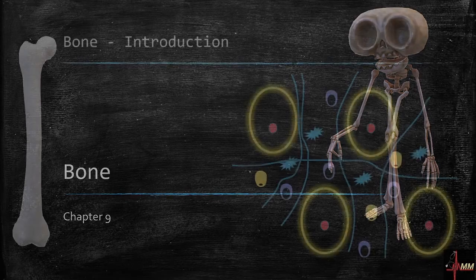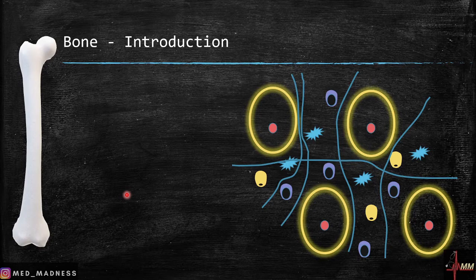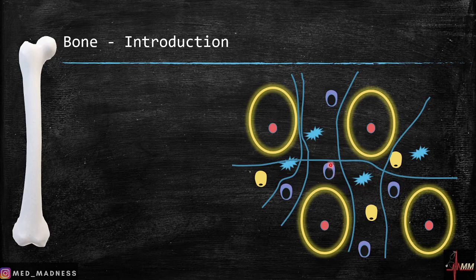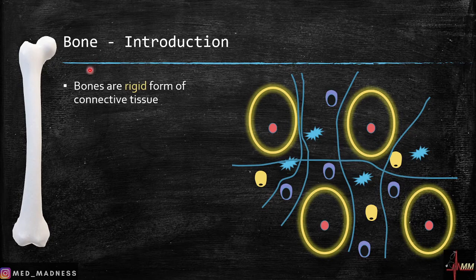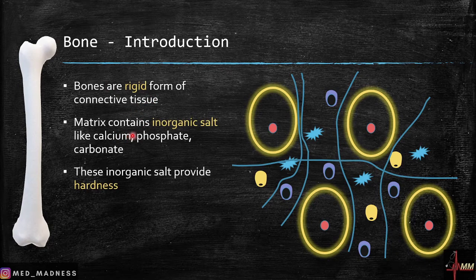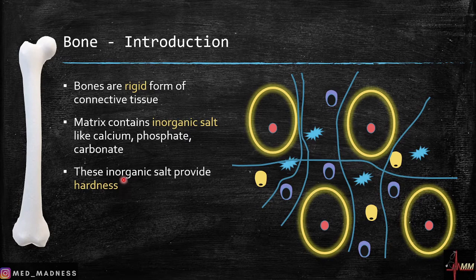Let's get a brief overview about bones. You have cells, fibers, and the matrix. The important point about bone is that the matrix contains inorganic salts like calcium and phosphates, and that is what gives the hardness to the bone. Bone is a specialized connective tissue. Its matrix contains inorganic salts like calcium phosphate and carbonates, and these salts provide the hardness to the bone.